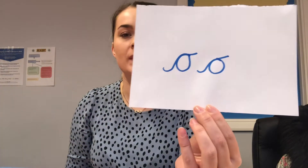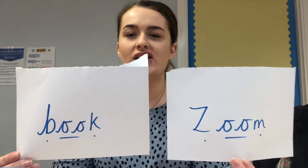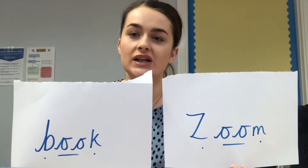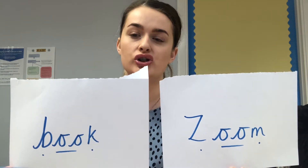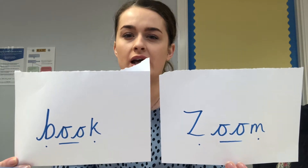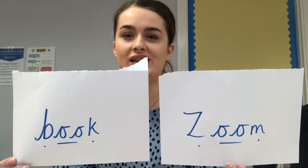And then we have this one which makes two sounds — it is 'oo' or 'uh', long or short. I've got two words. I wonder if you can tell your adult which word has the long 'oo' sound and which has the short 'uh' sound. Pause this video and see if you can tell your grown-up which one is the short 'uh' sound and which is the long 'oo' sound.